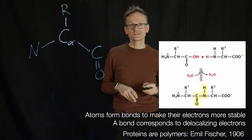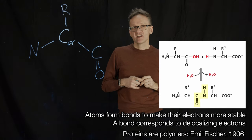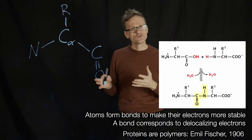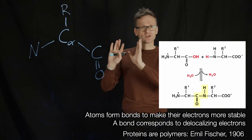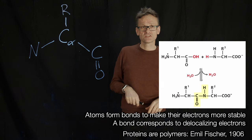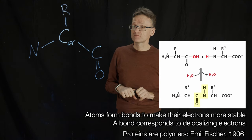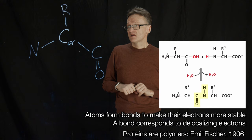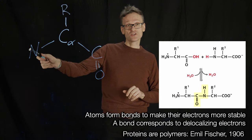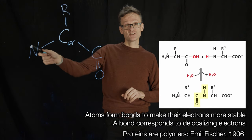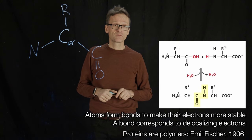The R group is a varying group that is different in different amino acids. It's quite common to draw these large molecules this way and just ignore all the hydrogens to make our life simpler. Normally these amino acids are quite charged, so we have a plus-one charge at the nitrogen end and a minus-one charge at the carboxyl end in solution.